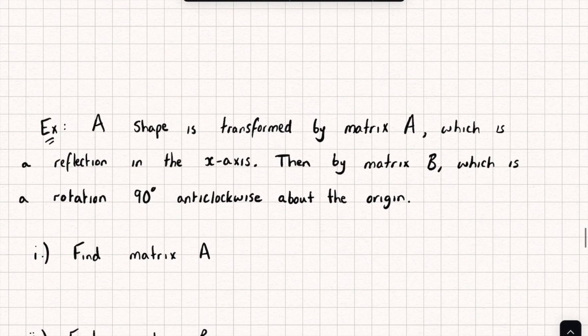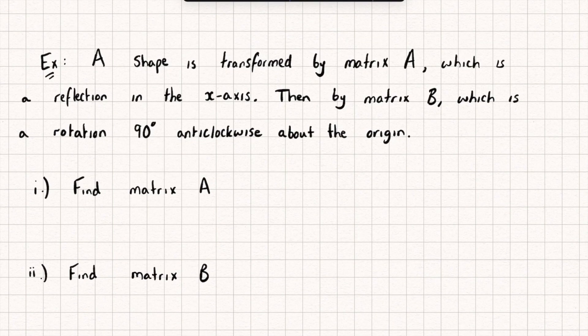So here's a question where we have a shape which is transformed by matrix A, and that transformation is a reflection in the x-axis. Then it's transformed the second time by the matrix B, which is a rotation 90 degrees anticlockwise about the origin. The first part is to find the matrix A. If you've forgotten how to do this, how to find a transformation matrix,